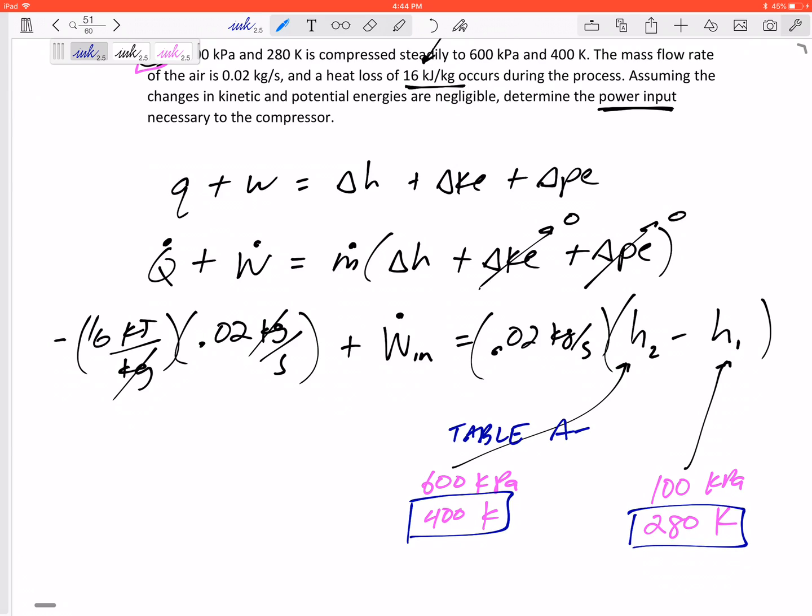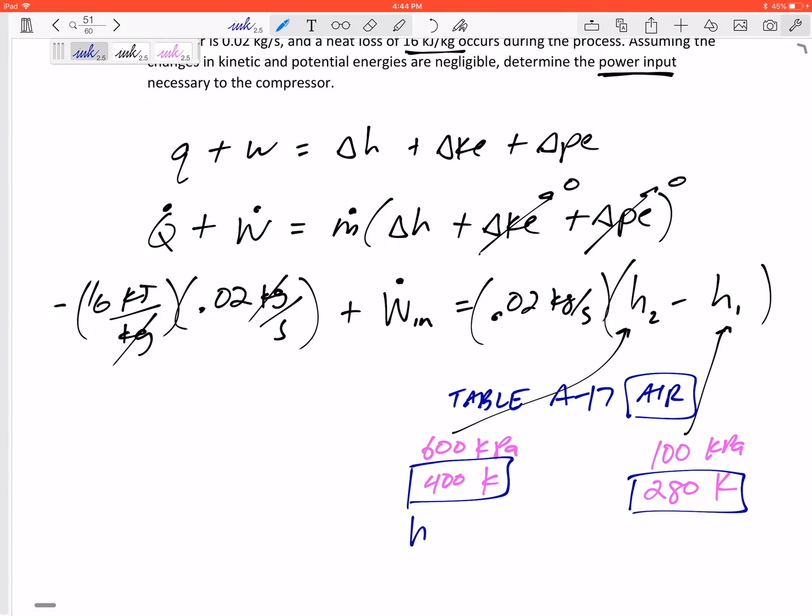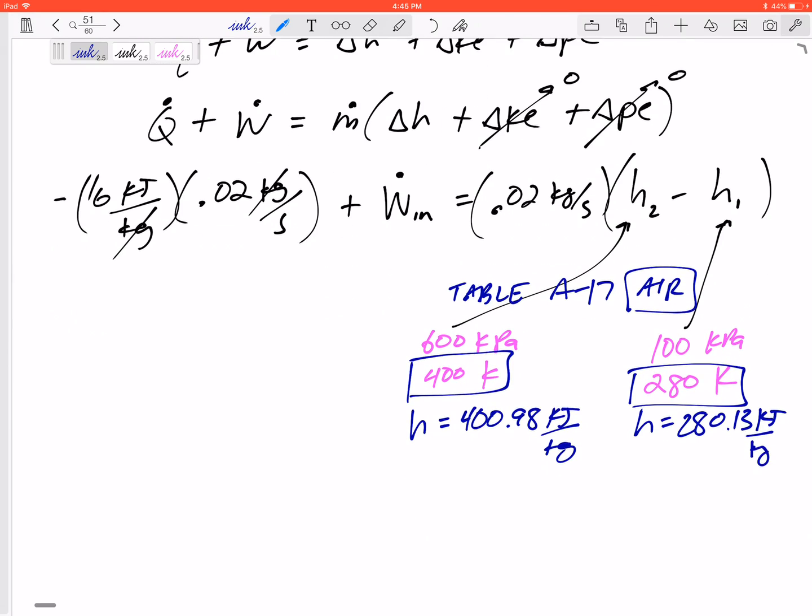Go ahead and flip to Table A17 for air. All of those properties are just dependent on temperature, so I can get the h out at 400 K. Look at your property table. You should see 400.98 kilojoules per kilogram, and the h in at 280 is 280.13 kilojoules per kilogram.